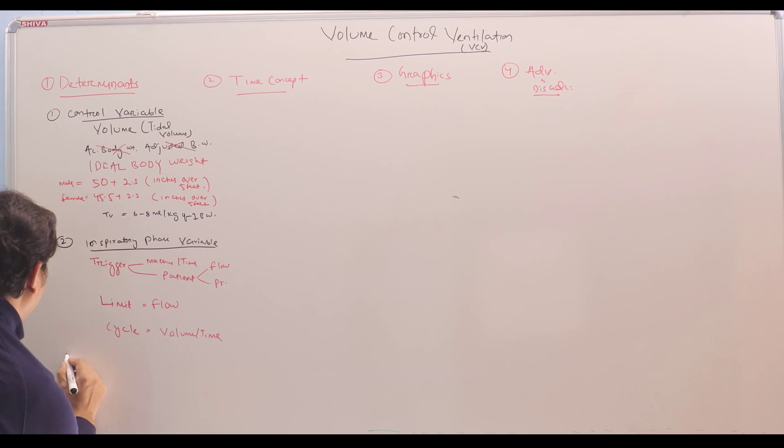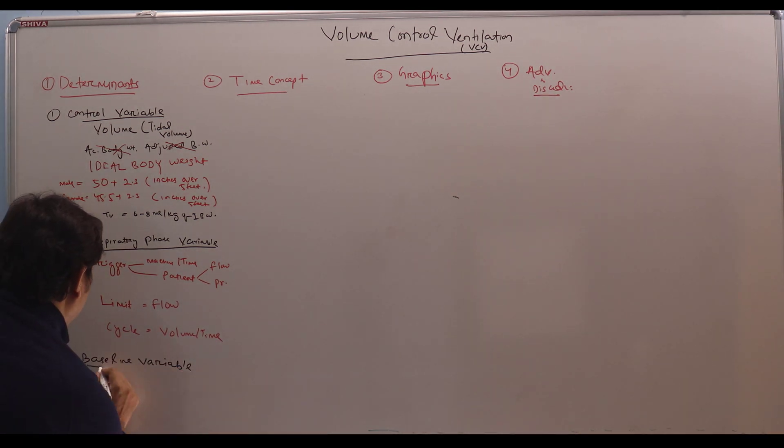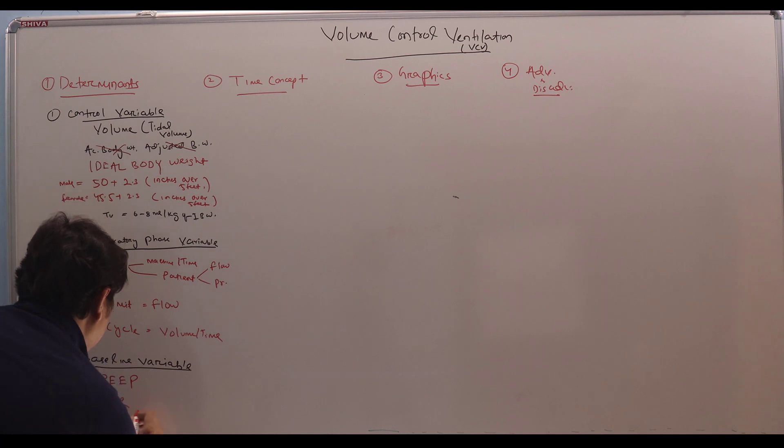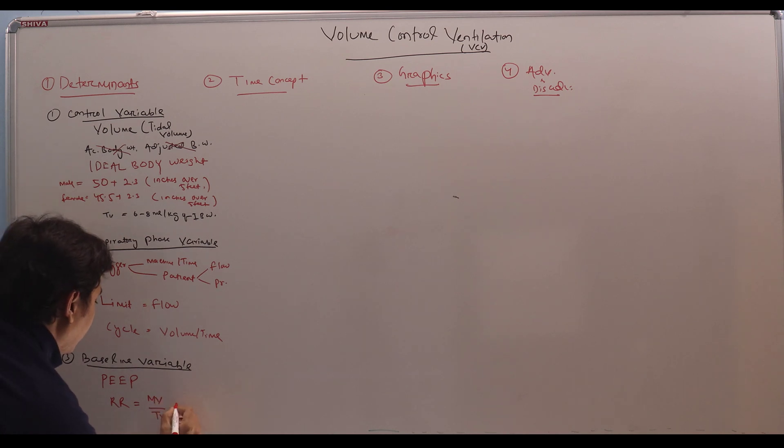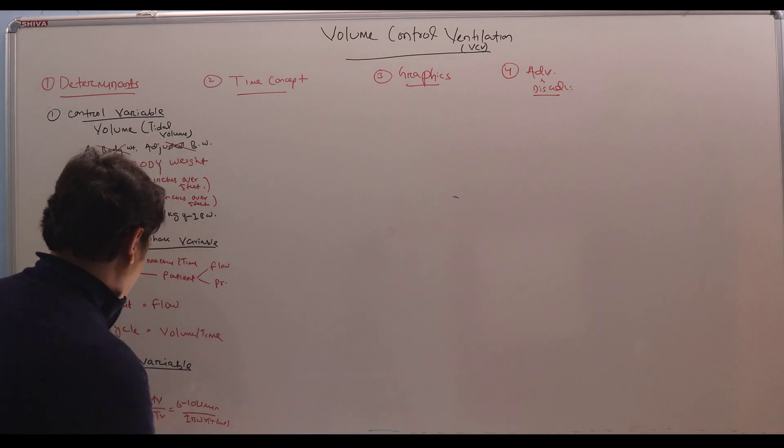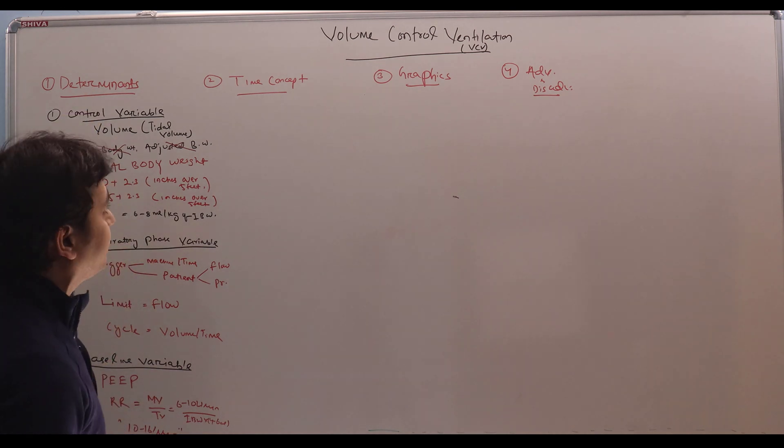Now third will be baseline variable. Here we will set two things. One is PEEP. Another is respiratory rate. How to set the respiratory rate? Respiratory rate equals minute ventilation divided by tidal volume. Tidal volume already we have calculated. Minute ventilation will take around 6 to 10 liters per minute. And tidal volume is ideal body weight into 4 to 6 ml. Respiratory rate ideally is around 10 to 16 per minute for a normal patient. So these are the three determinants of volume control ventilation.